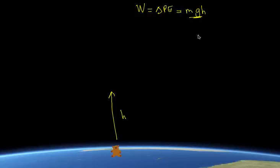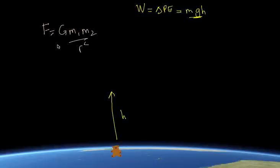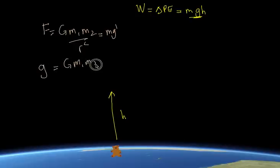The g value is dependent on how far Teddy has been lifted. If we work out the force due to gravity, that equals the gravitational formula: Gm₁m₂/r². That is the weight of Teddy. The acceleration due to gravity then becomes Gm₁/r² — Teddy's mass cancels out. So the acceleration due to gravity is not a constant; it varies depending on how much r changes.